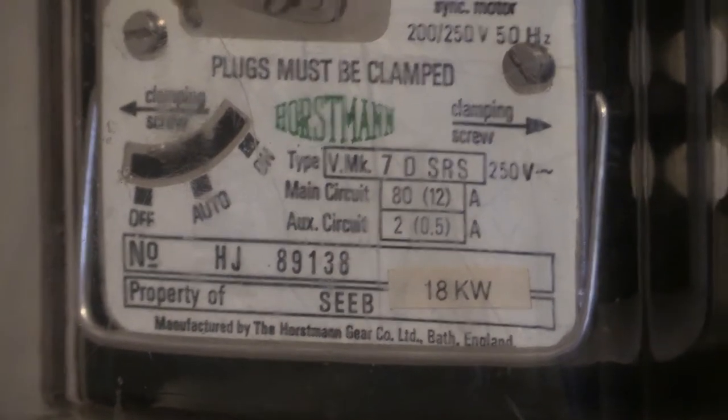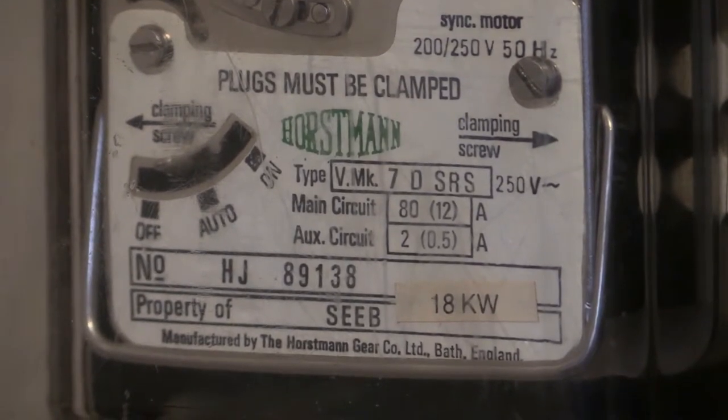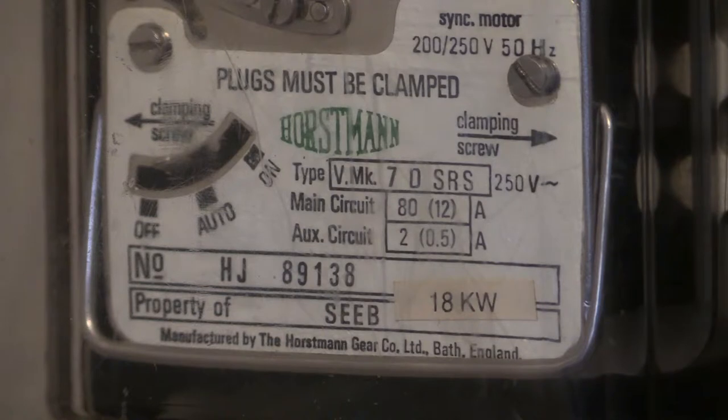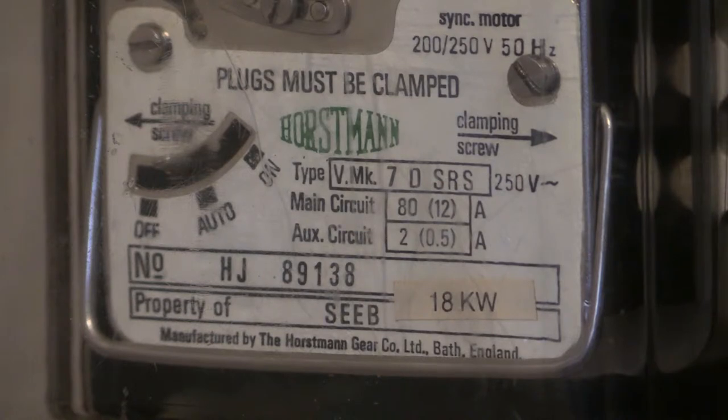Let's zoom in on the specification plate for the time switch on the left. This one does have a bit of an incorrect detailing on it where it says type 7D SRS. We will be looking at one of those later on in another video because I do own one, and we shall be having a look at what the difference is between a 7 SRS and a 7D SRS. This time switch was ex-electric board stock, and the previous owner was Southeast Electricity Board, as can be seen on the bottom of the specification plate where it says SEEB.